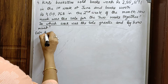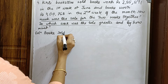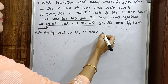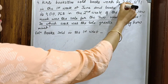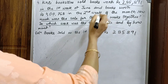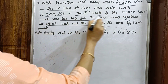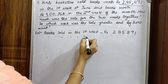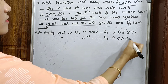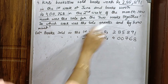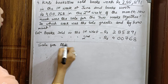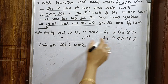Books sold in the first week: rupees 2,85,891. Books sold in the second week: rupees 4,00,768. The sale for the two weeks together will be the addition of these two figures — first week plus second week.